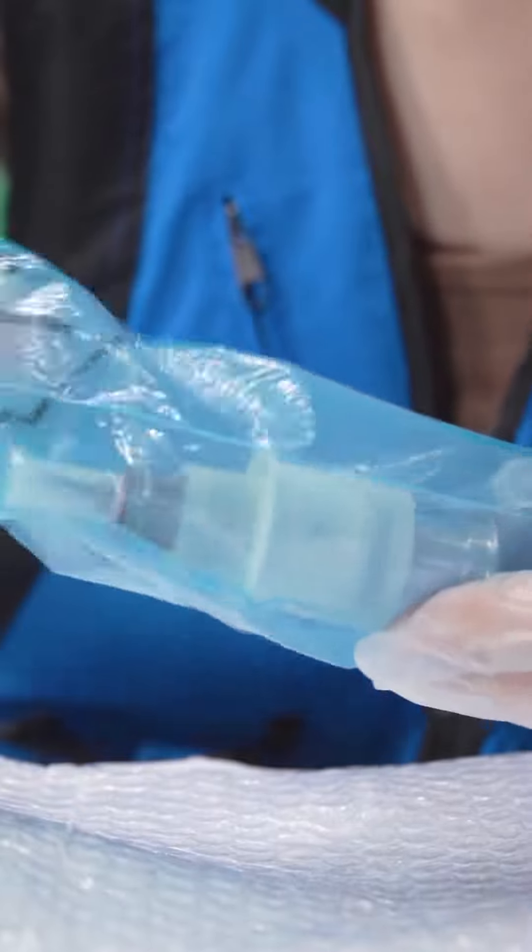The inside package is two layers. The first layer is the bubble bag can better protect the inside product. The second layer is the VCI anti-rust bag.